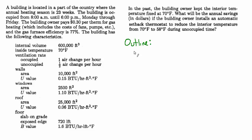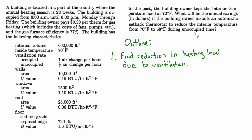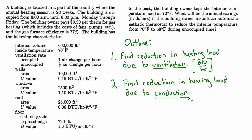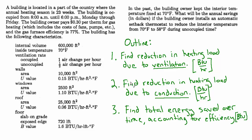Let's summarize the steps. First, quantify the reduction in heating load for the ventilation — that's BTUs per hour. Then find the reduction in heating load due to conduction through the walls, windows, roof, and floor — also BTUs per hour. Together those give the total energy transfer rate out of the building. Then we find the total energy saved over a year accounting for furnace efficiency, convert BTUs into therms, and then therms into dollars to find the annual savings.